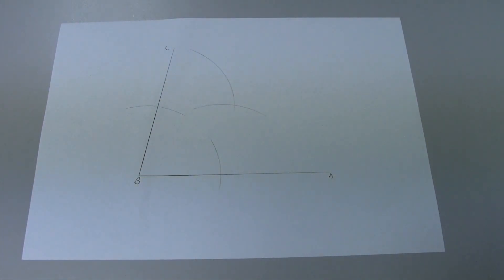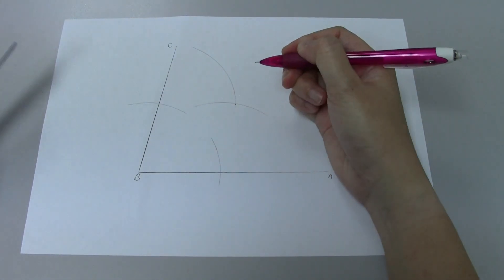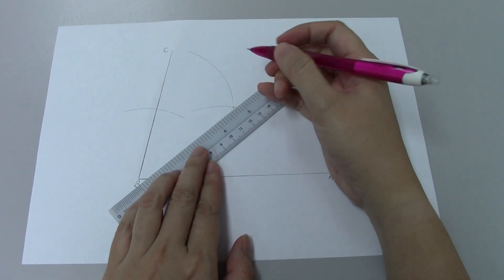Step four, we're going to join up the intersection point between the last two arcs that we have drawn to your point B.